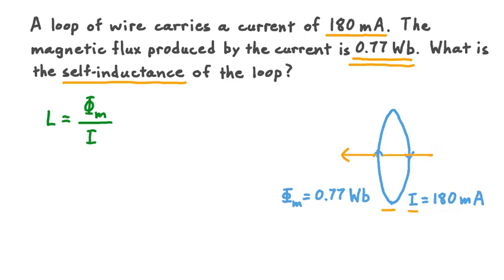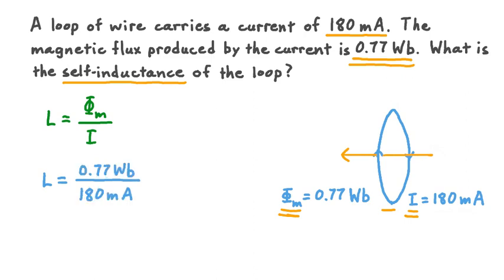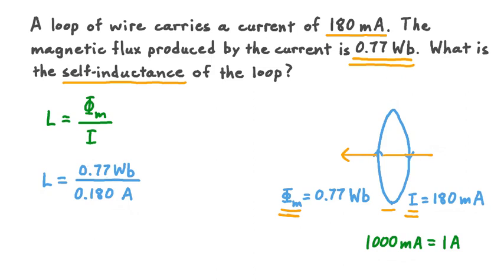We want to solve for the self-inductance of the loop. The self-inductance, capital L, equals the ratio of the magnetic flux phi sub m produced by a current I in the loop to that current I. Our current I is in the loop, and the magnetic flux is produced by the magnetic field generated by that current. So we only need to divide phi sub m by I. Before dividing, we convert 180 milliamperes to 0.180 amperes, since 1,000 milliamperes equals 1 amp. Dividing, to two significant figures, we find a result of 4.3 Henrys — the self-inductance of this loop.